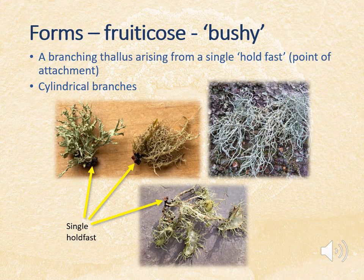Next are the fruticose or bushy lichens. These differ from the foliose forms in having a single point of attachment or holdfast, from which the thallus branches. This form breaks the rules a little regarding thallus structure because the branches are cylindrical — meaning the whole branch can be exposed to light and you can see the photobiont all the way round. If you cut a section through that thallus, the central part would still be a mesh of fungal hyphae with no photobiont.